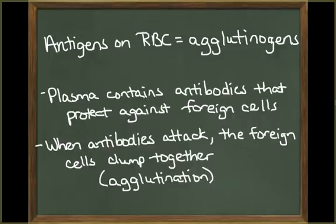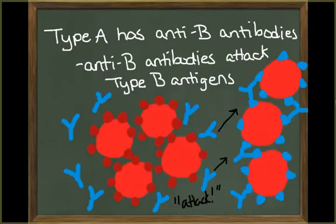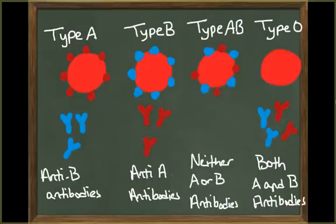Antigens on red blood cells are given the name agglutinogens. Your plasma contains antibodies that will defend your red blood cells against foreign blood. When these antibodies attack, the foreign cells will clump together, which is called agglutination. If you have type A blood, your plasma contains anti-B antibodies, which will attack type B surface antigens if they appear. If you have type B blood, your plasma contains anti-A antibodies. For a person with type O, their plasma contains both anti-A and anti-B antibodies. And for a person with type AB, their plasma contains neither anti-A nor anti-B antibodies.